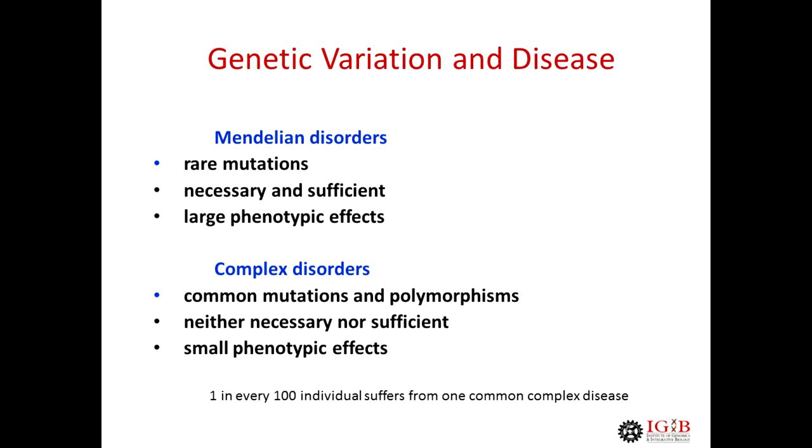How do you decide about the molecular genetics of complex diseases? There are genetic diseases caused by mutations that are necessary and sufficient to precipitate the phenotype — those are Mendelian diseases. There are other diseases where multiple variations play a role and neither of them individually is necessary or sufficient to cause the disease — those are the multifactorial complex diseases.